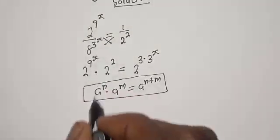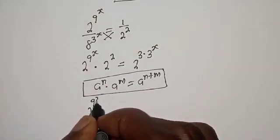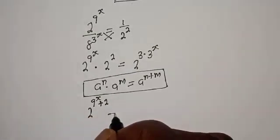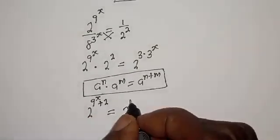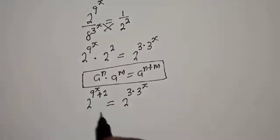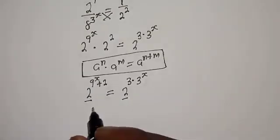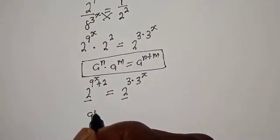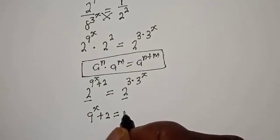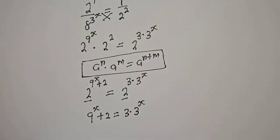Then here we have 2 raised to power 9 raised to power s plus 2, is equal to 2 raised to power 3 multiplied by 3 raised to power s. Since we have the same base 2, we work with the exponents: 9 raised to power s plus 2 is equal to 3 multiplied by 3 raised to power s.